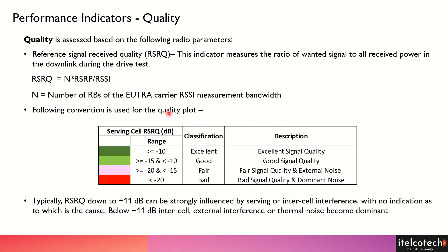The quality has different ranges. If it is really high, it means the reference signal received power is very good and we have no external interference or adjacent cell interference on the same frequency band in 4G. If RSRP is good and RSSI is lesser, the RSRQ would be greater than minus 10 dB, which we consider excellent. We will see the coverage plot and the RSRQ plot in the subsequent slide.